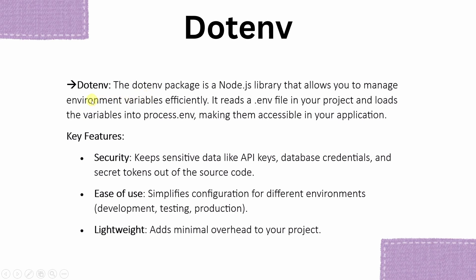Then we have installed dotenv. Using this package, we can easily manage environment variables. What this package will be doing is reading the .env file in our project, and then whatever variables we have created, it is just going to process those variables. So inside the .env file, we can keep sensitive data like API keys. If we integrate Razorpay, we will have API keys and secret keys. All that sensitive information we can store inside this .env, and using the dotenv package we can easily manage those variables.